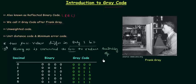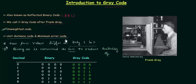Today gray codes are widely used to facilitate error correction in digital communications such as cable TV systems. Gray code is an unweighted code — there is no positional weight in the case of gray code. Gray code is also called a unit distance code and minimum error code.